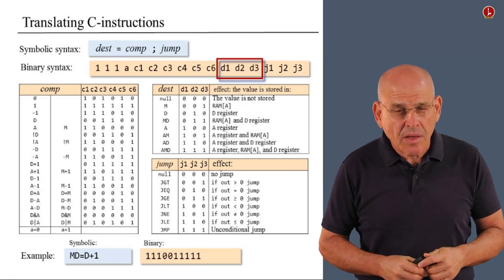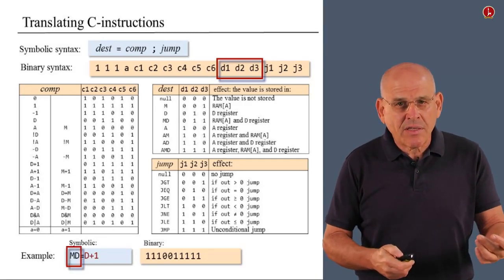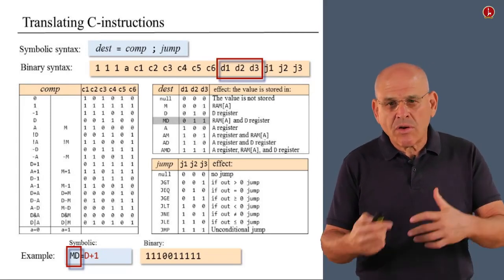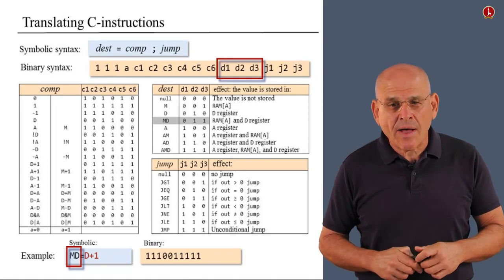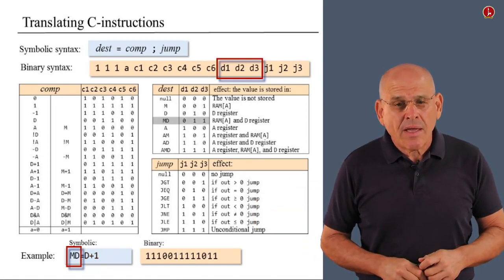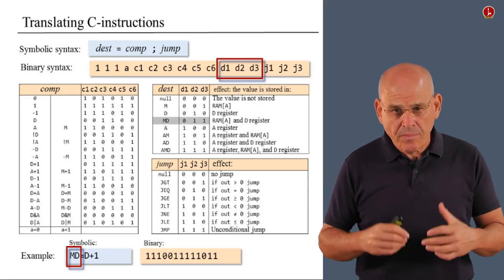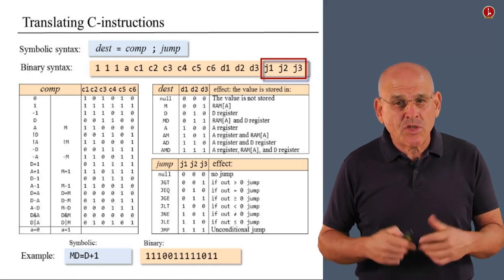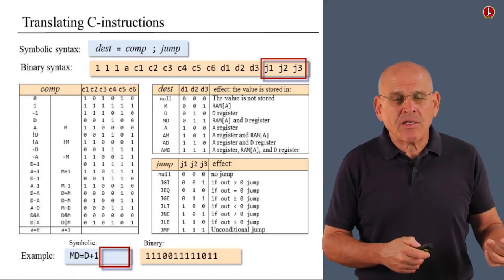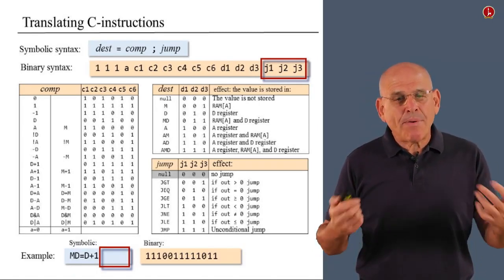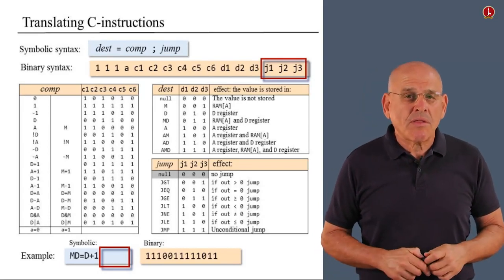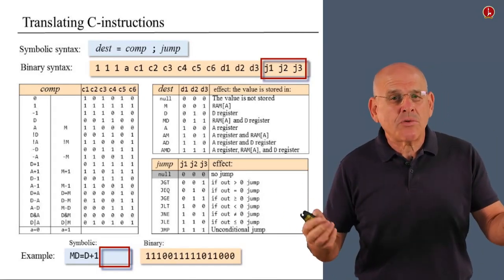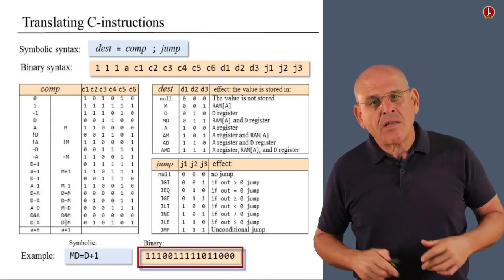The next thing to do is focus on the next part of the instruction, which corresponds to the destination. So, I look up the value of my destination field. It happens to be md. I consult the relevant table. And I see that the md mnemonic corresponds to 0 1 1. I take this 0 1 1 value. I append it to the string that I gradually build. Moving along, the remaining three bits correspond to the jump directive. I look up the value of the jump directive in my source instruction. I see that it's null. I look up null in the relevant table. And I see that it corresponds to the three bits 0 0 0. I take these bits, append them to the end of the string, and voila. We have managed to translate the symbolic instruction into its binary equivalent.